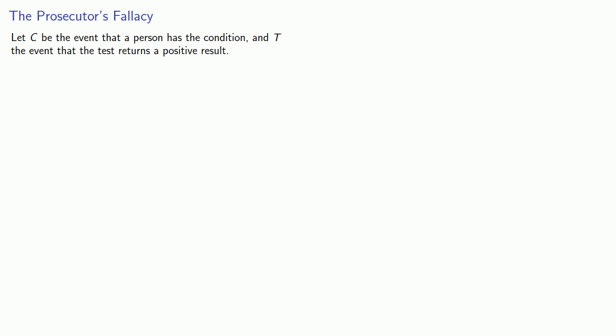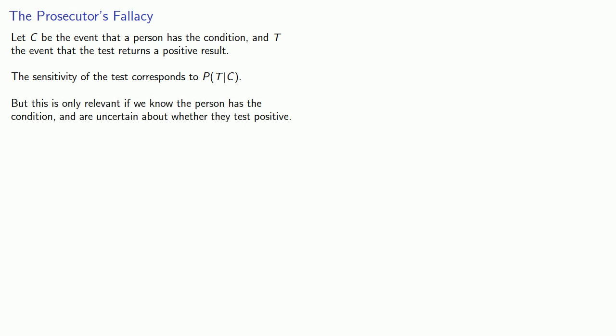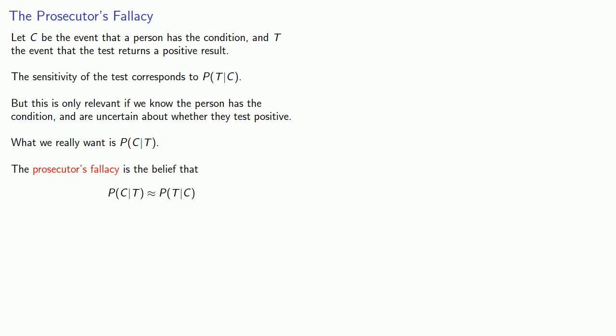These conditional probabilities lead to what's known as the prosecutor's fallacy. Let C be the event that a person has a condition, and T the event that the test returns a positive result. The sensitivity of the test corresponds to the probability of T given C — the probability the test result is positive given that the condition is present. But what we really want to know is the probability of C given T — the probability that they have the condition given that they test positive. The prosecutor's fallacy is the belief that P(C|T) is about the same as P(T|C), but in fact these two probabilities are completely unrelated.